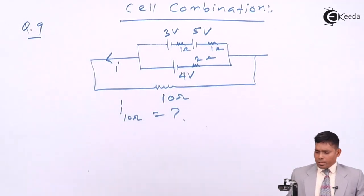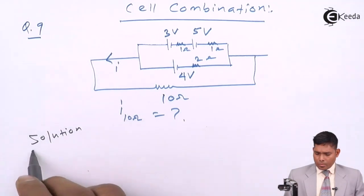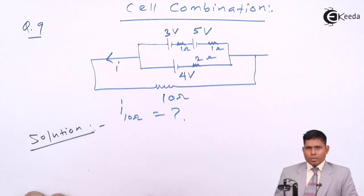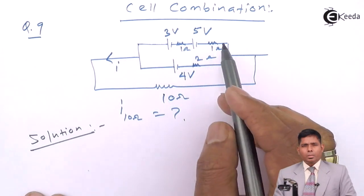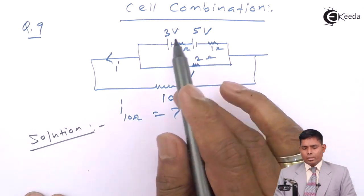What is the question? Let us solve this. Now we will reduce this number of cells into a single cell, equivalent cell and equivalent internal resistance combinations.